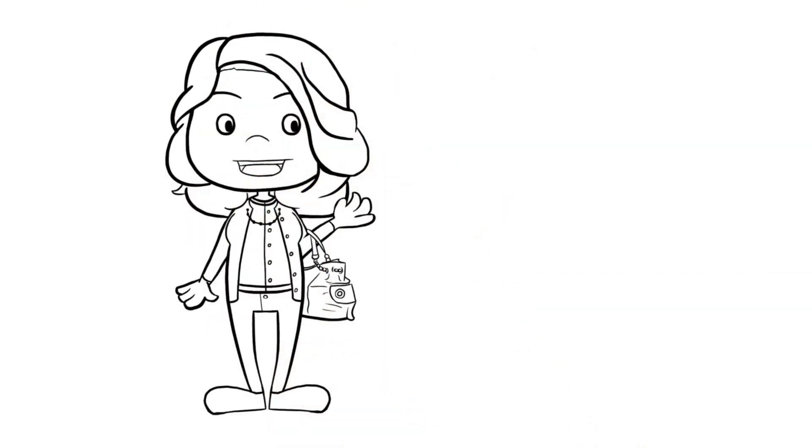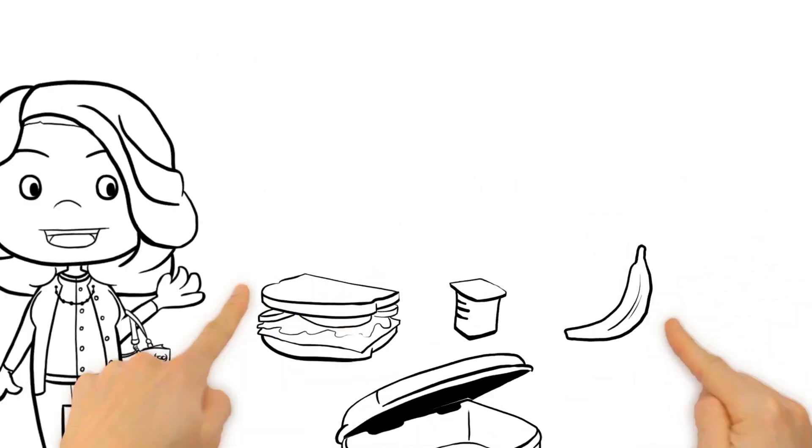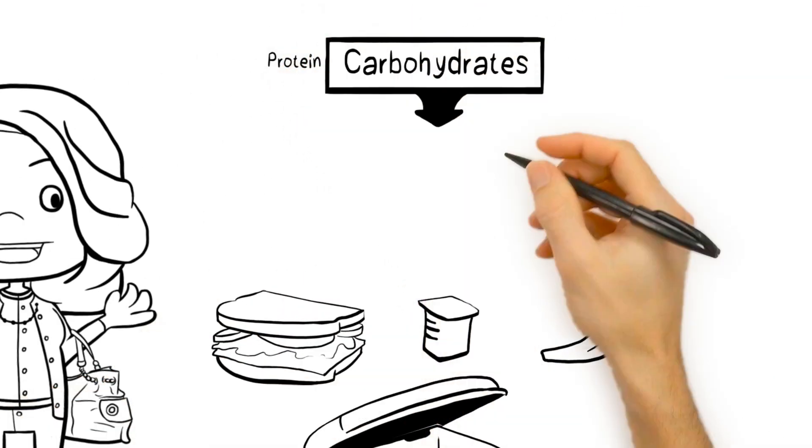Meet Sally. Her balanced lunch contains a sandwich, a banana, and a yogurt. All of these foods contain carbohydrates, proteins, and fats.